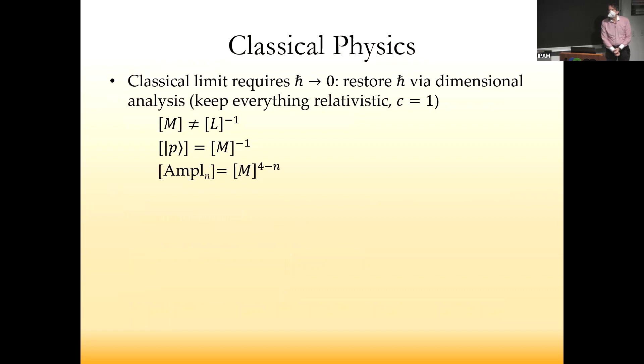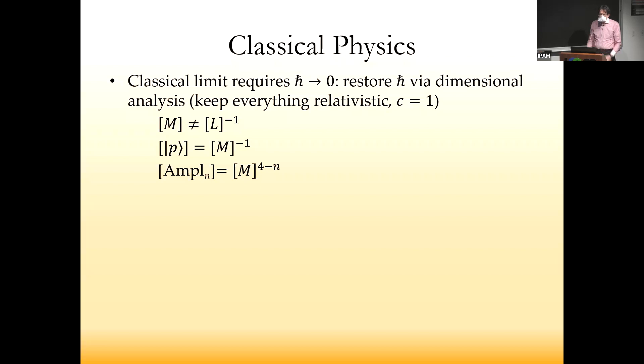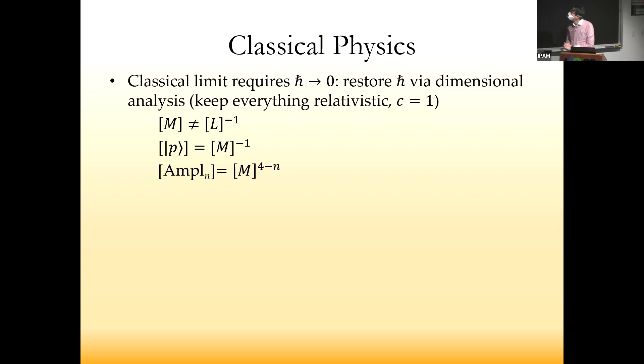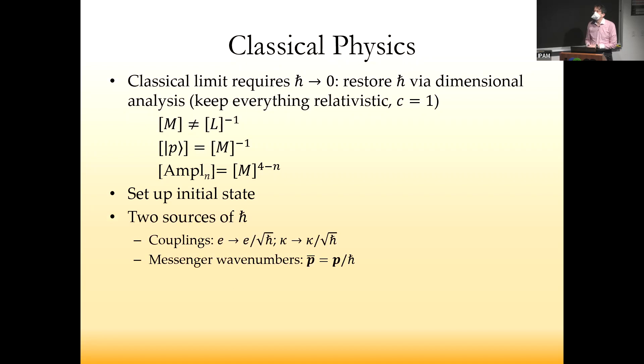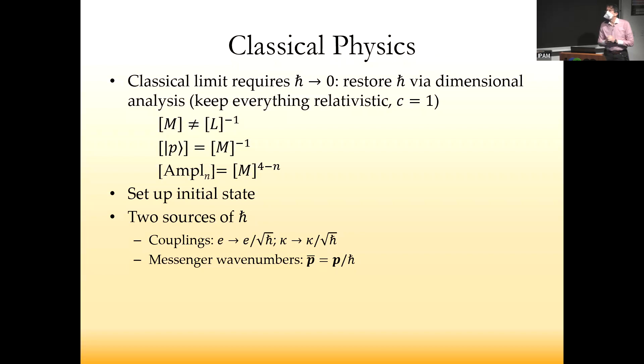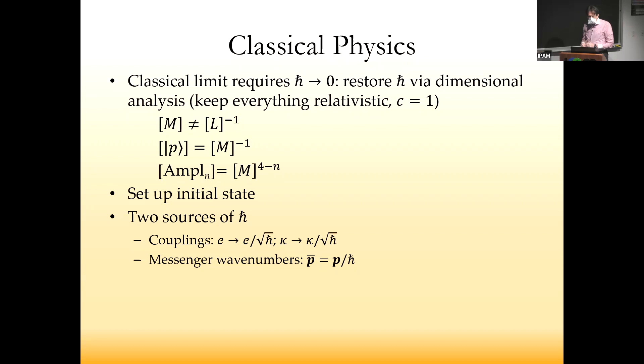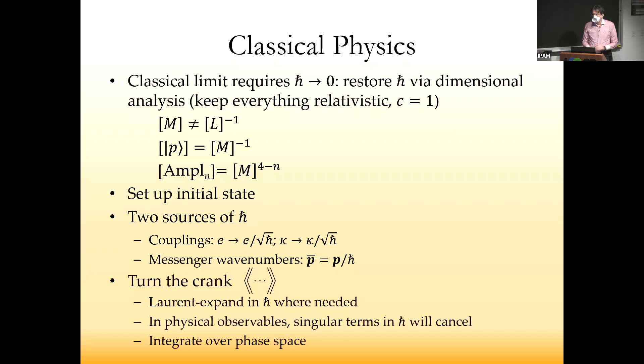If we're going to do classical physics, we need to take the ℏ goes to zero limit. We restore ℏ via dimensional analysis in a way that keeps the conventional normalization of plane wave states and scattering amplitudes. We then set up our initial state and look at all the sources of ℏ, which come from couplings or from messenger wave numbers. Messengers are the particles that carry long-range forces.